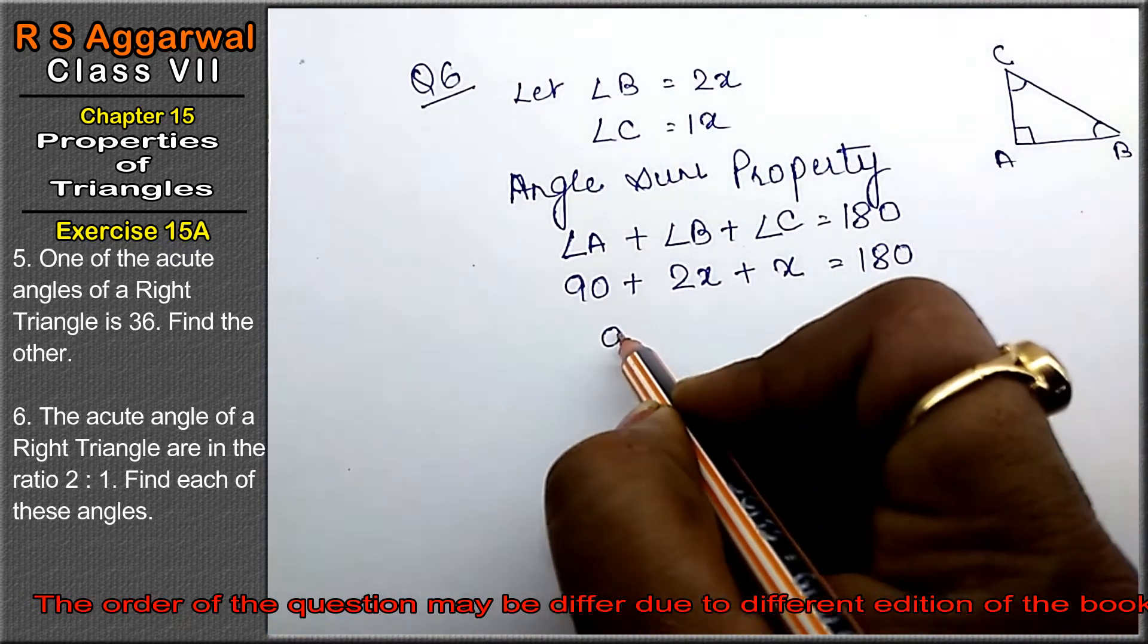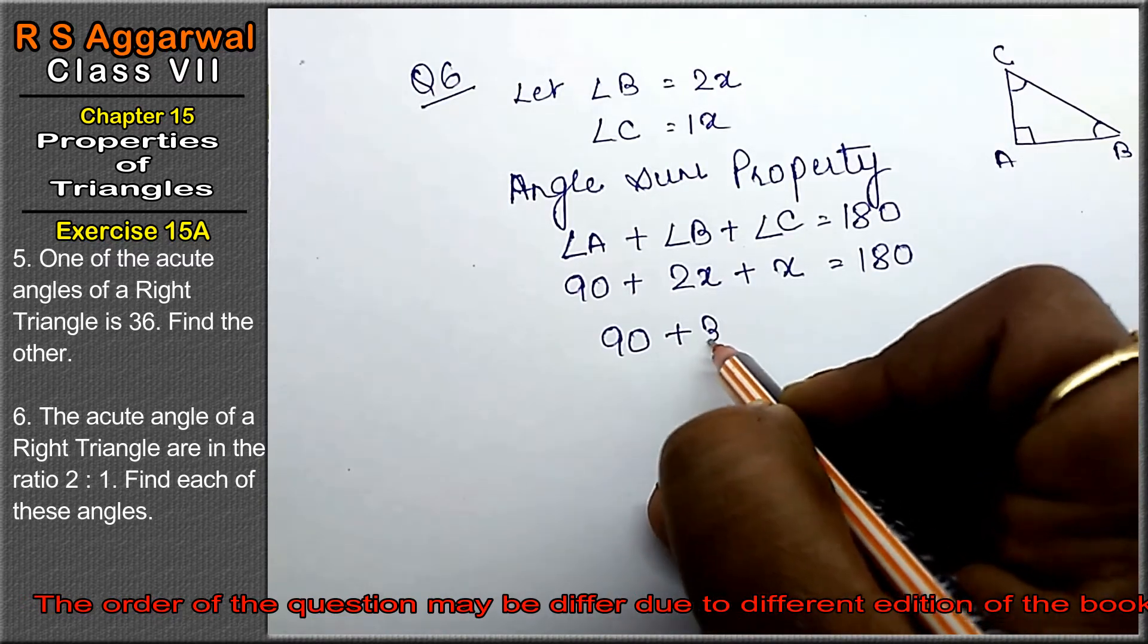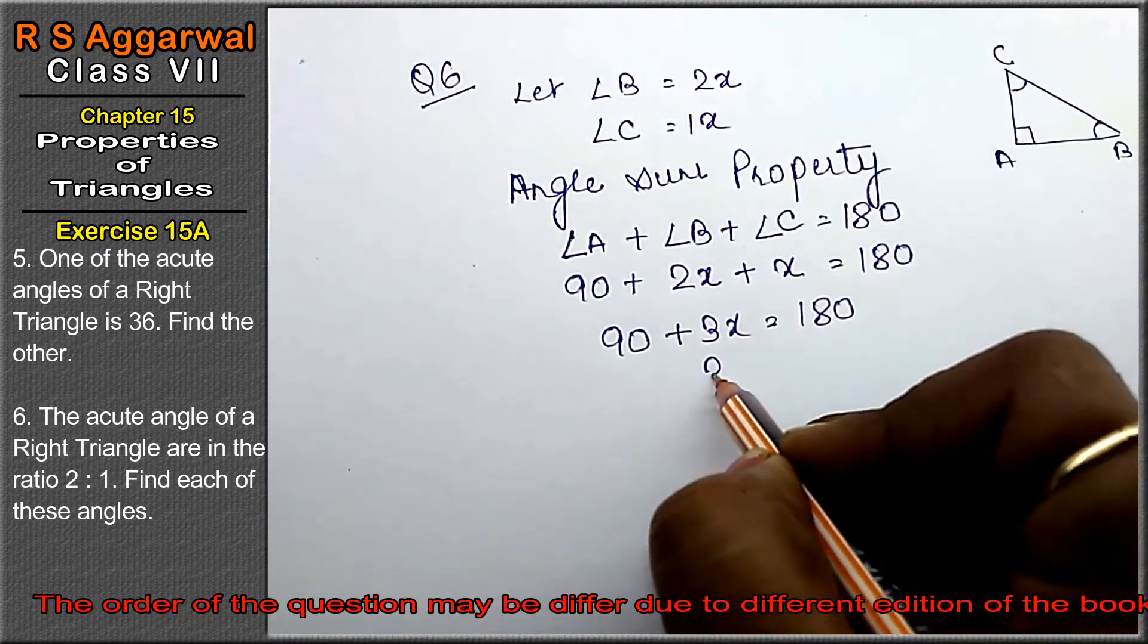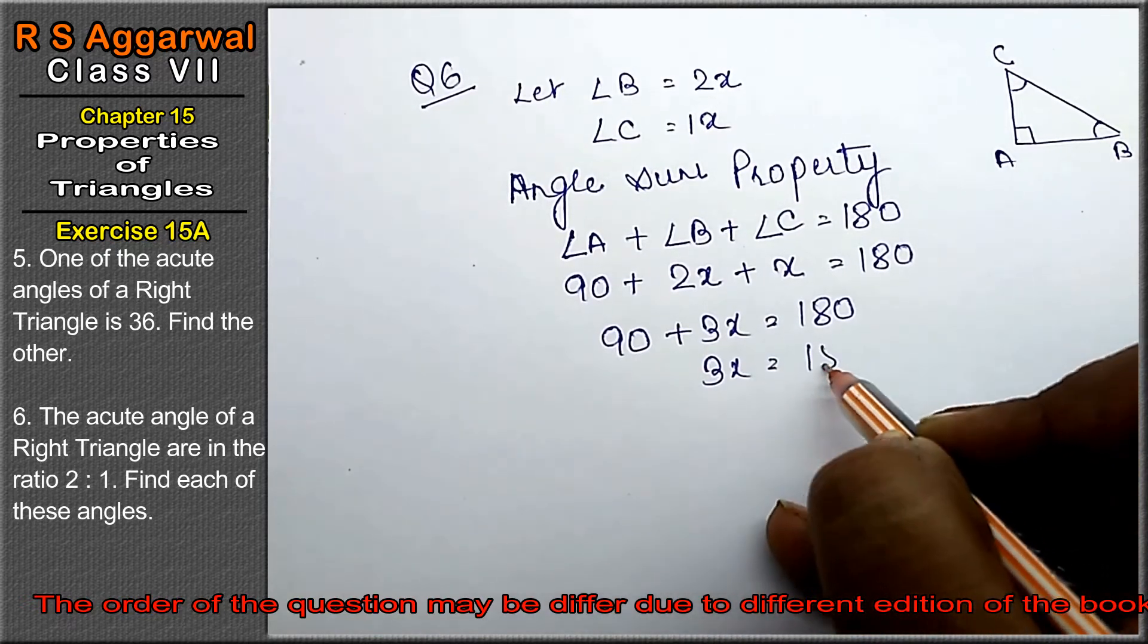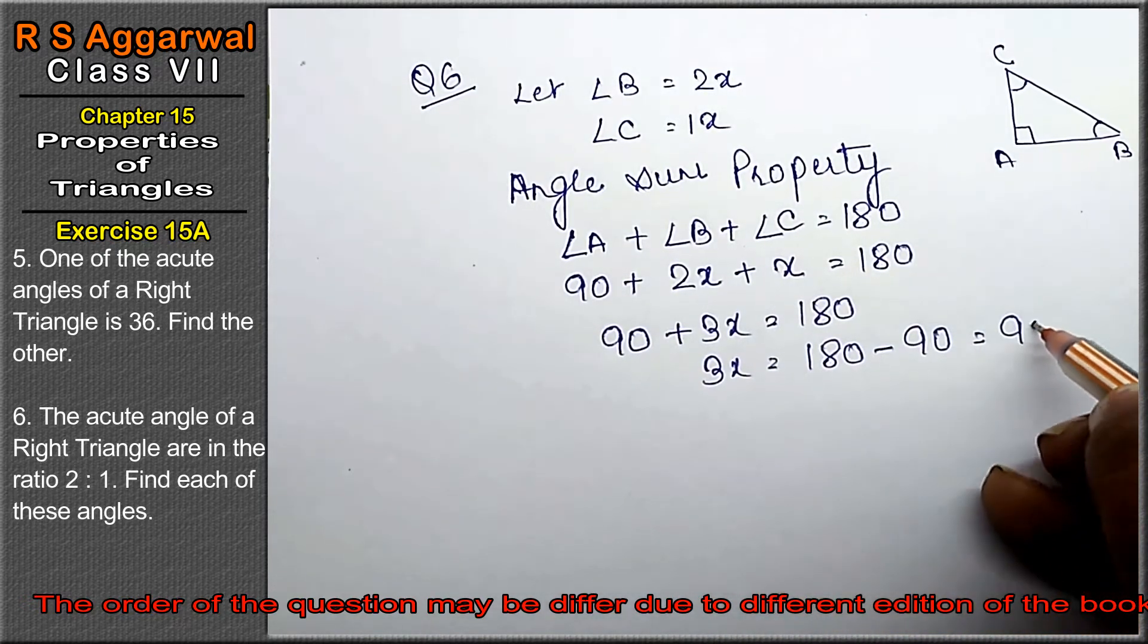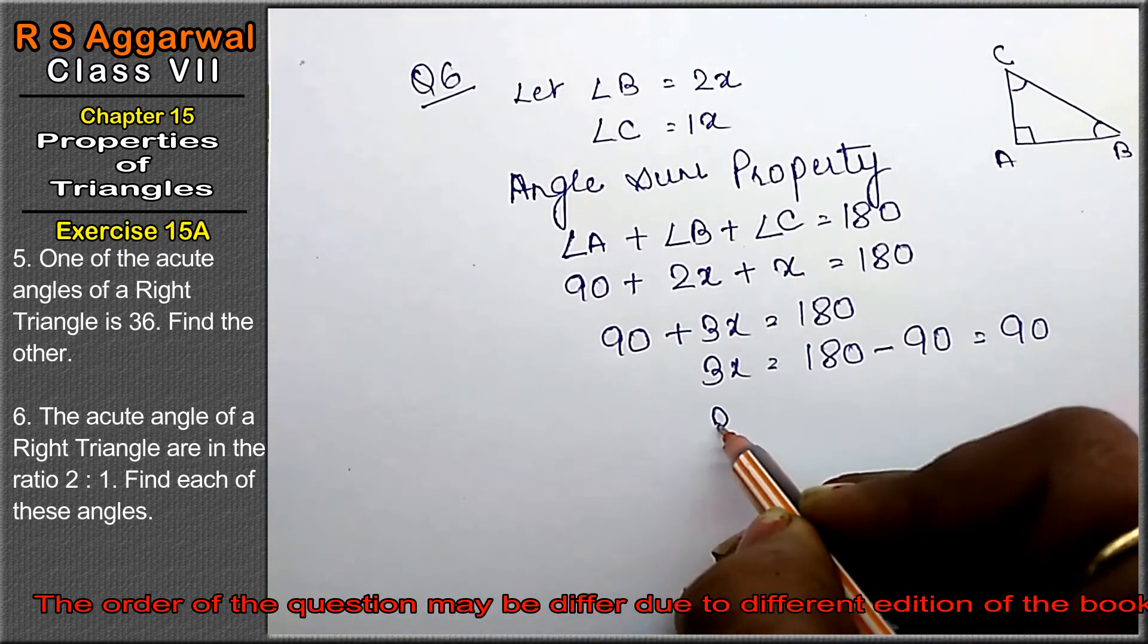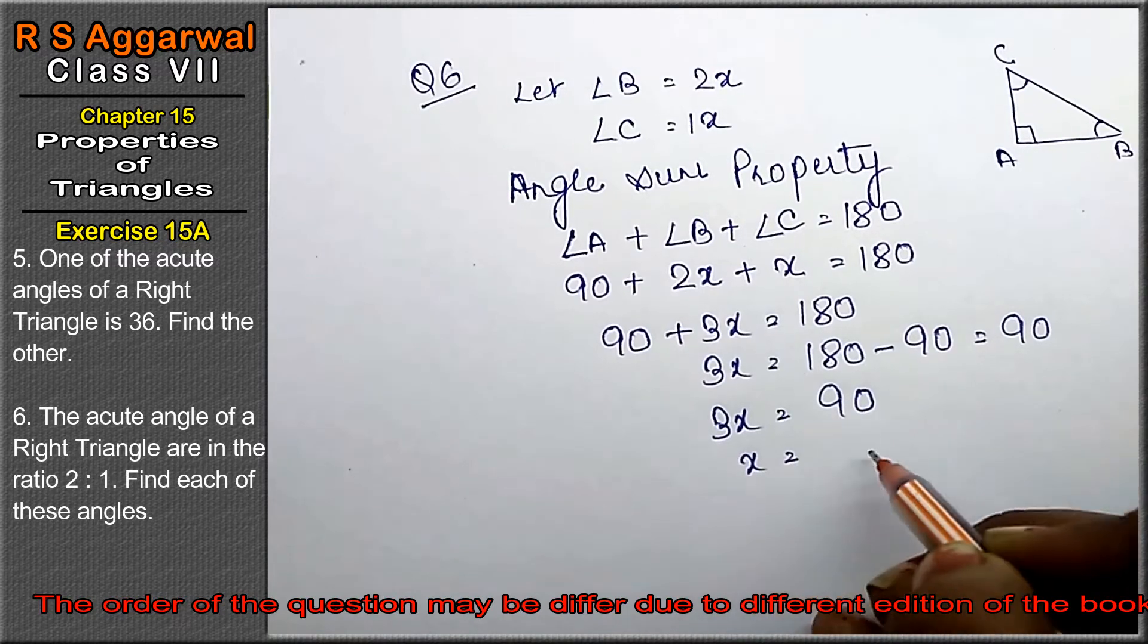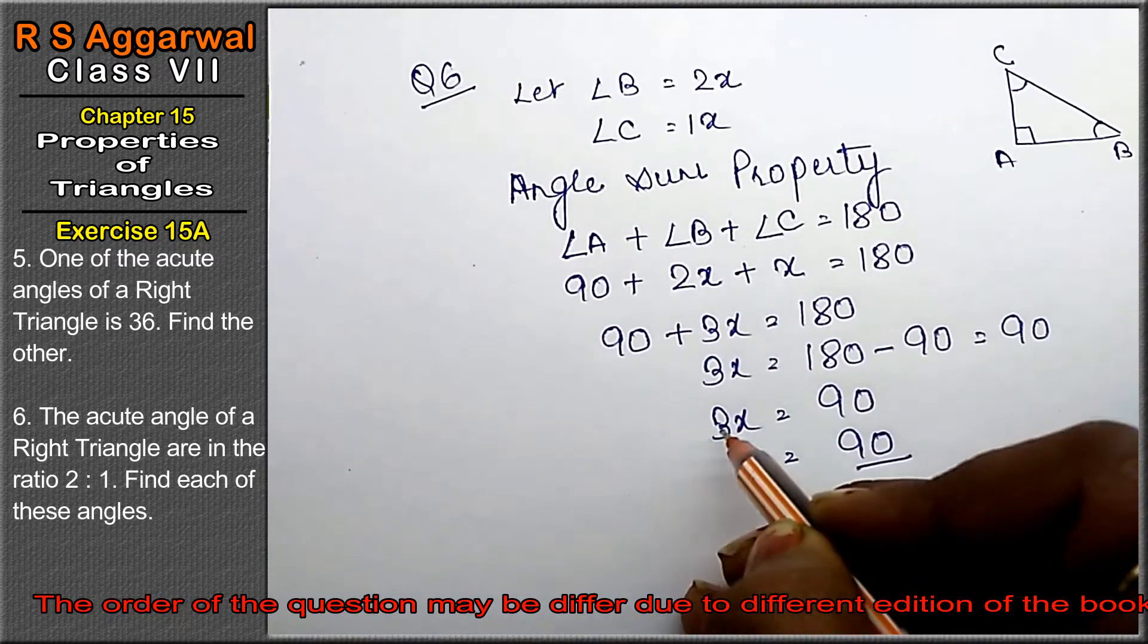So 90 plus 3x equals 180. We go 180 degrees minus 90, so 3x equals 90.